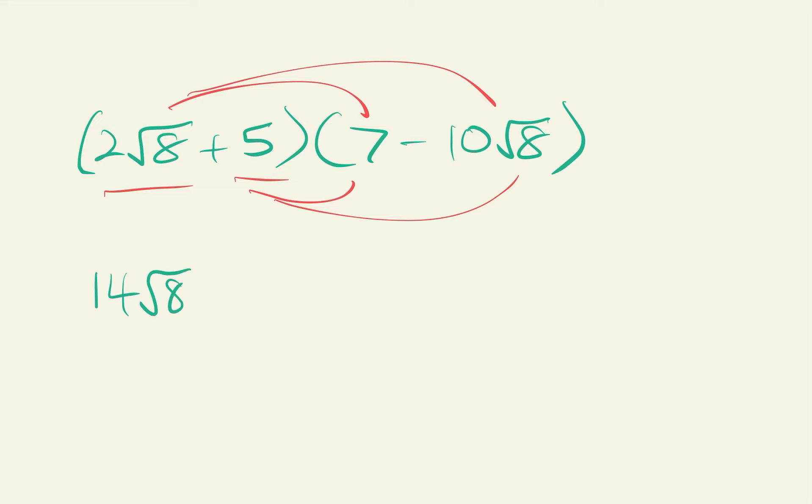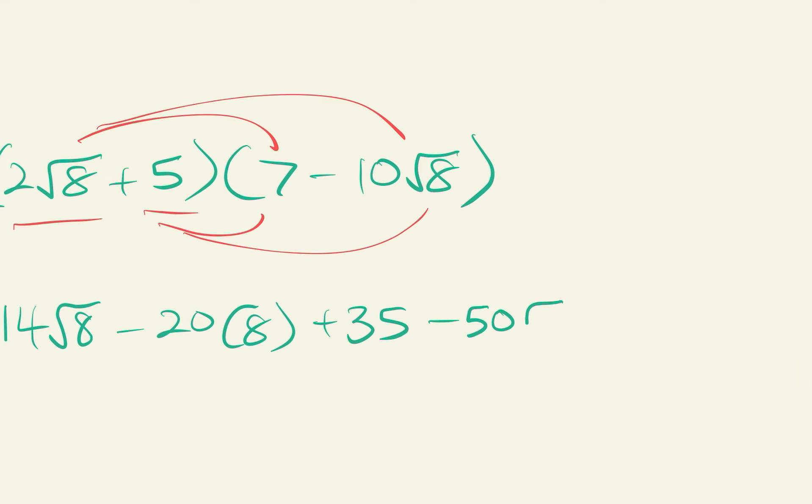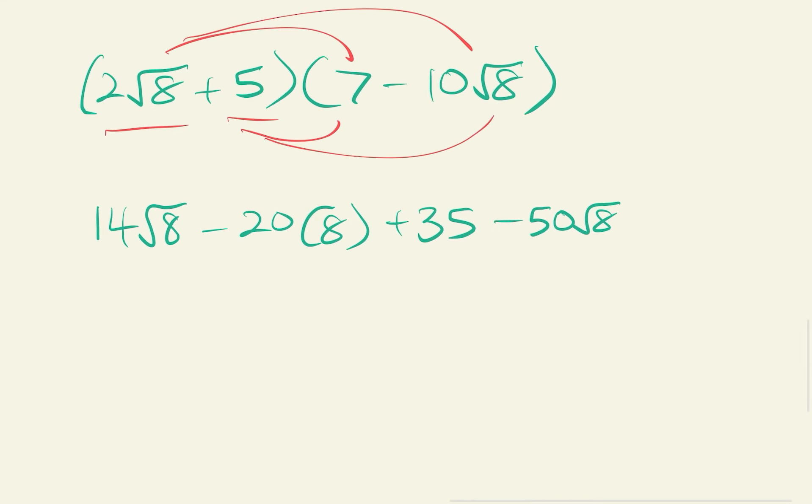Okay, then we get 35 here. And then 5 times negative 10, we get minus 50 square root 8. Then we simplify things out. We get negative, hold on, my print not working now, so sorry. We get negative 160 plus 35. Okay, after that, we will get 14 minus 50, which is actually negative 36 square root 8. So, if we work this out, we will get negative 125 minus 36 square root 8. Oh my god, man.